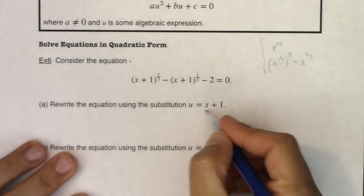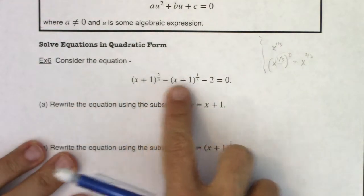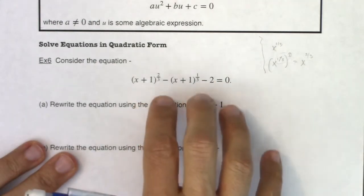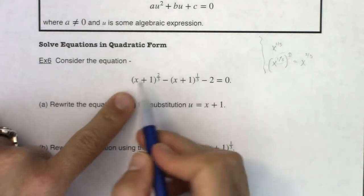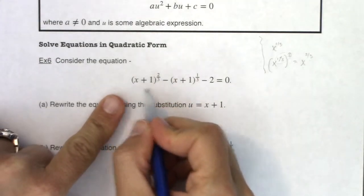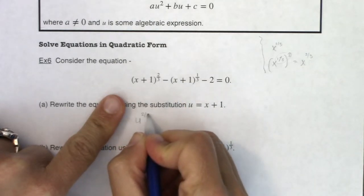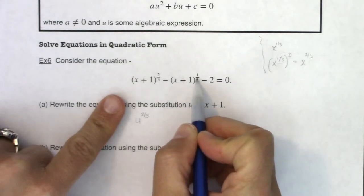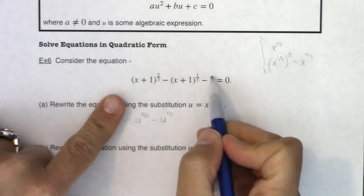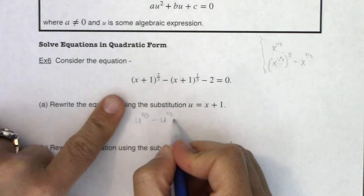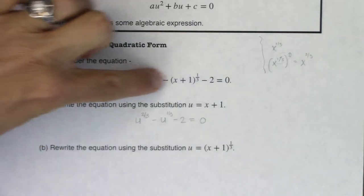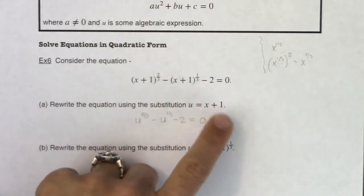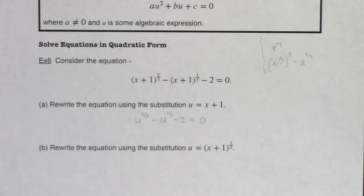We're going to try letting u equal x plus one. When I do a u substitution, I rewrite this entire equation — you will not see the letter x anymore, only the letter u. So instead of x plus one to the two-thirds, I can rewrite that as u to the two-thirds. And instead of x plus one to the one-third, I can say u to the one-third. The minus two has no x in it, so it stays as negative two, and that equals zero. This is rewriting the equation using a u substitution — it's not in quadratic form yet.